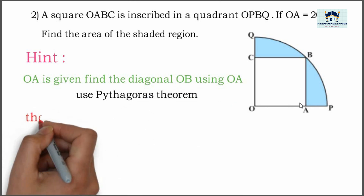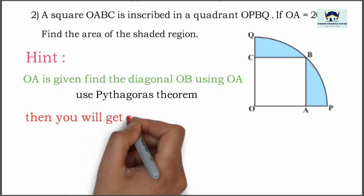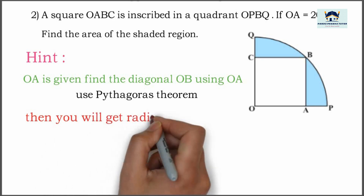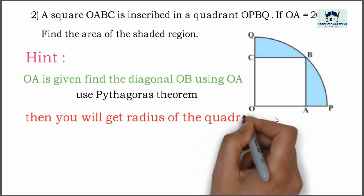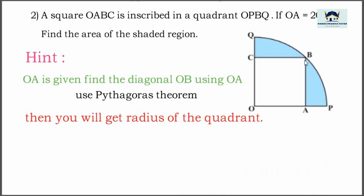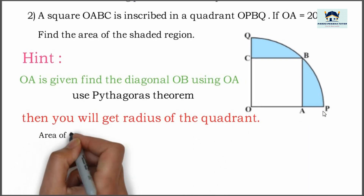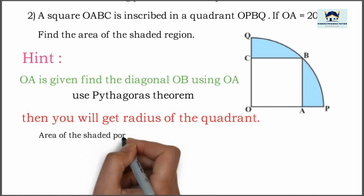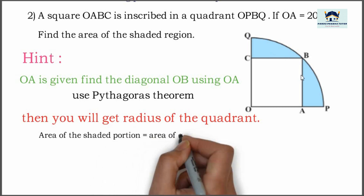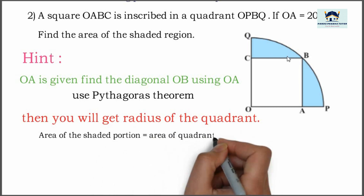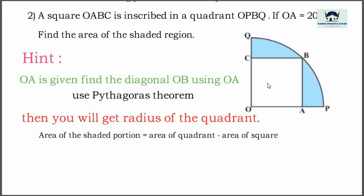Once you get the side of the square, you will get the radius of the quadrant. Once you get the radius of the quadrant, find the area of the quadrant. Then find the shaded portion using the formula: area of quadrant minus area of square.